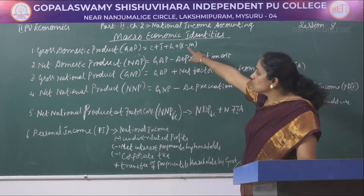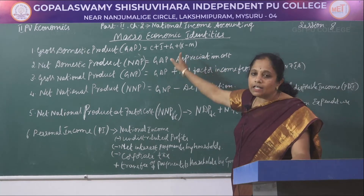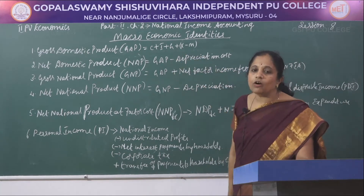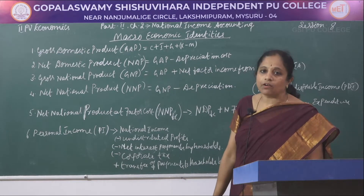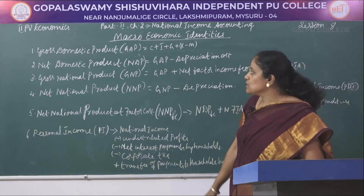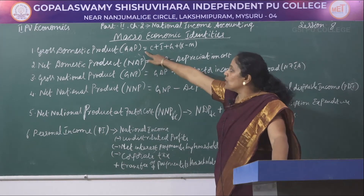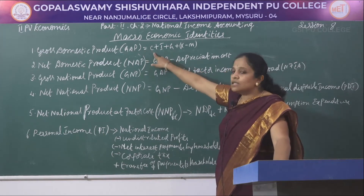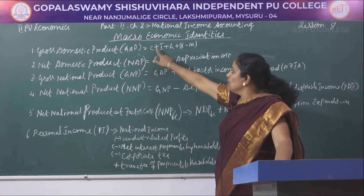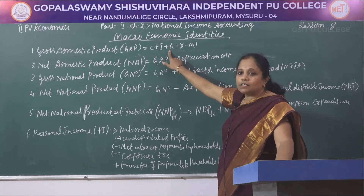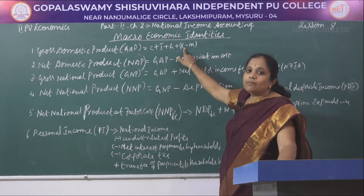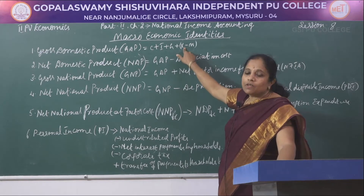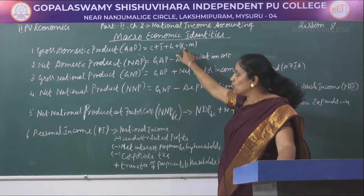The gross domestic product is the aggregate value of the goods and services generated over a period of a year. GDP involves the consumption expenditure plus the investment expenditure plus the government expenditure, along with the difference between exports and imports.